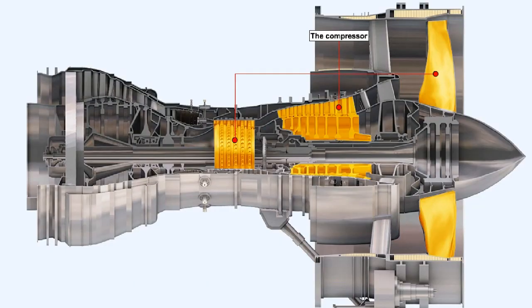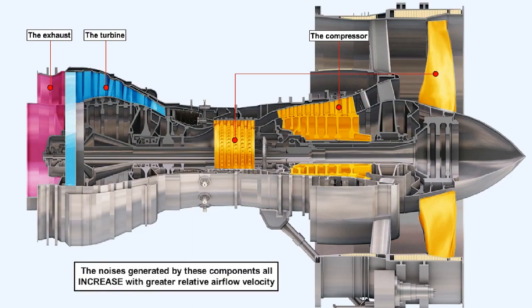The most significant source of noise from the engine originates from the compressor, the fan in the high ratio bypass engine, the turbine, and the exhaust. Although the noises which spring from these various sources all obey slightly different laws and mechanisms of generation, their levels all increase with greater relative airflow velocity.